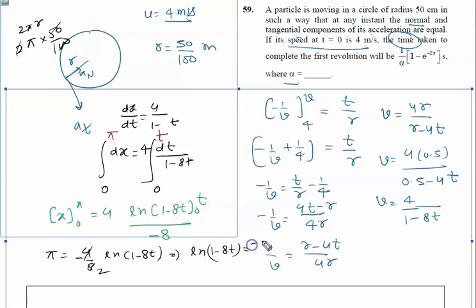So the next step we will write ln(1 minus 8t) equals minus 2π.